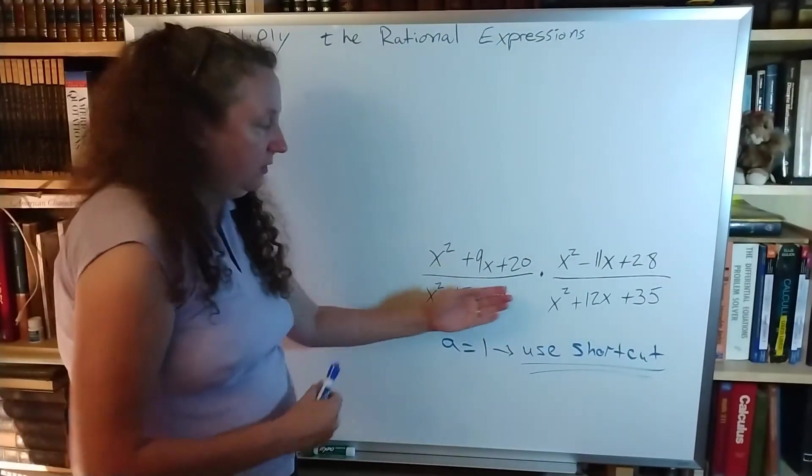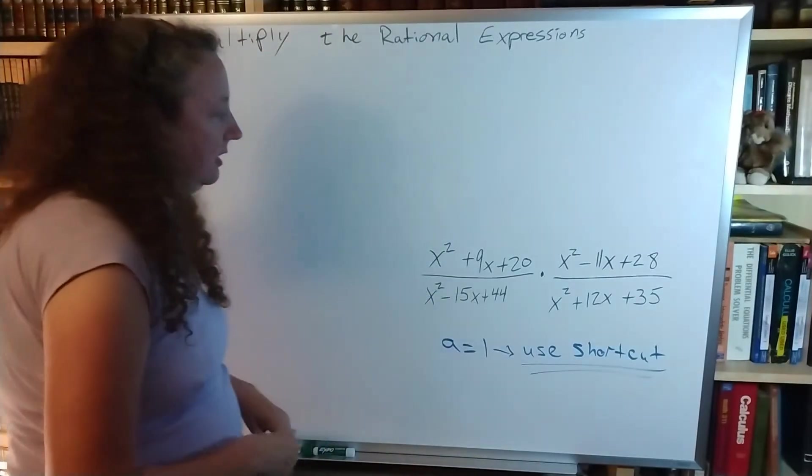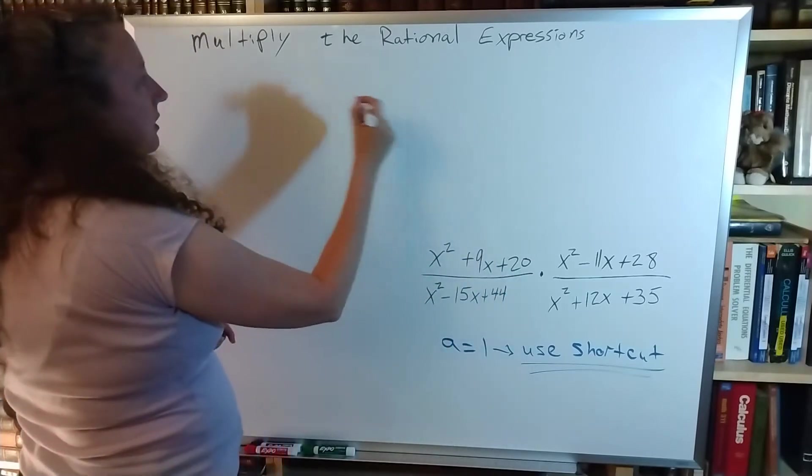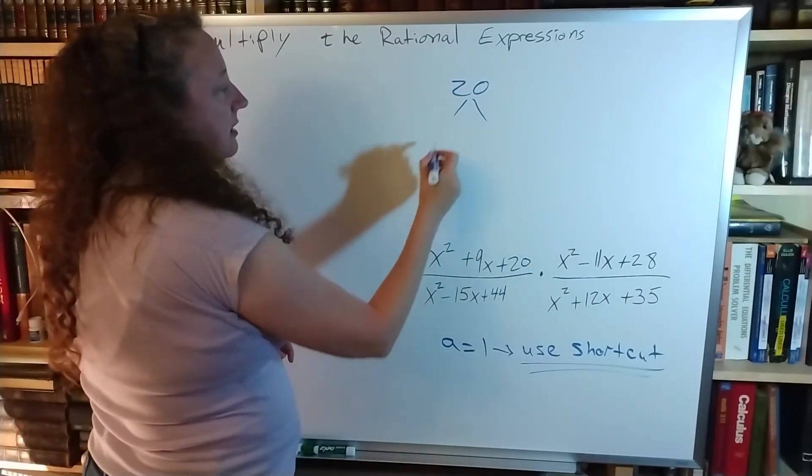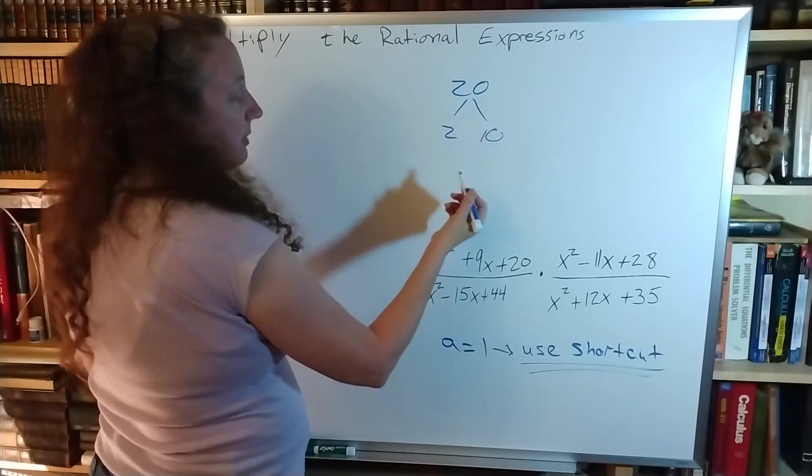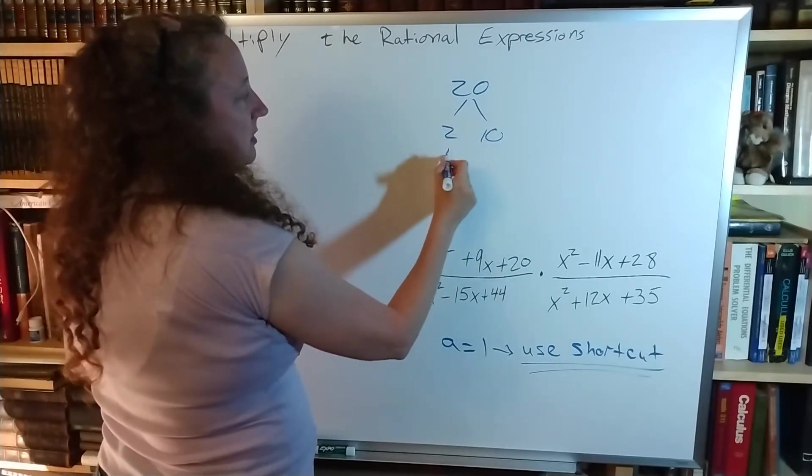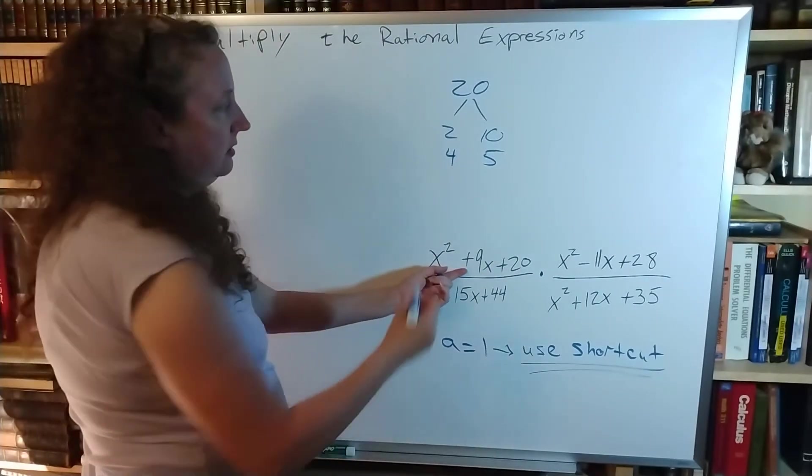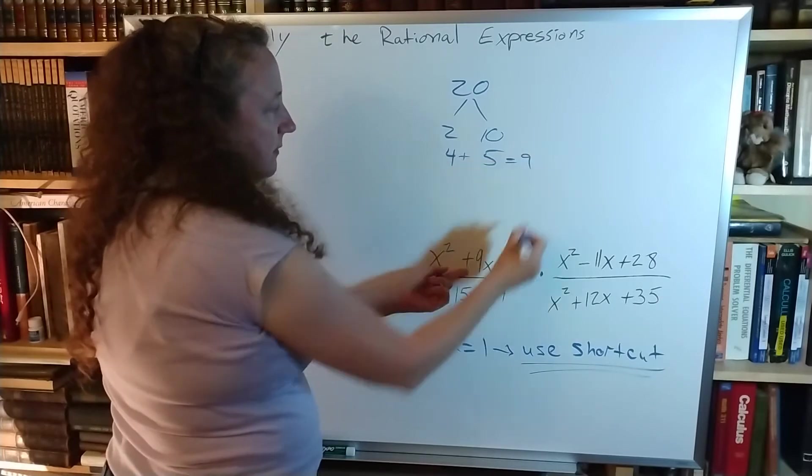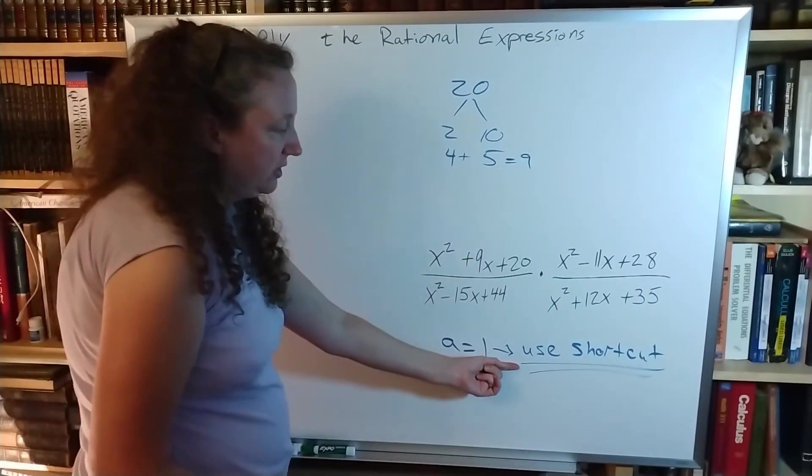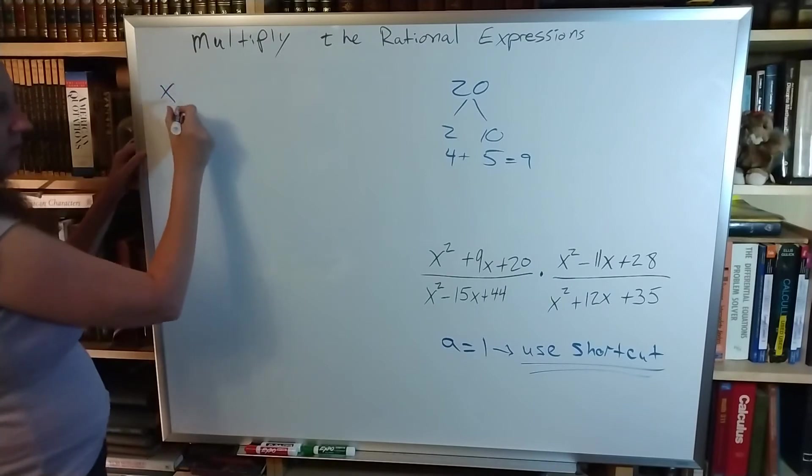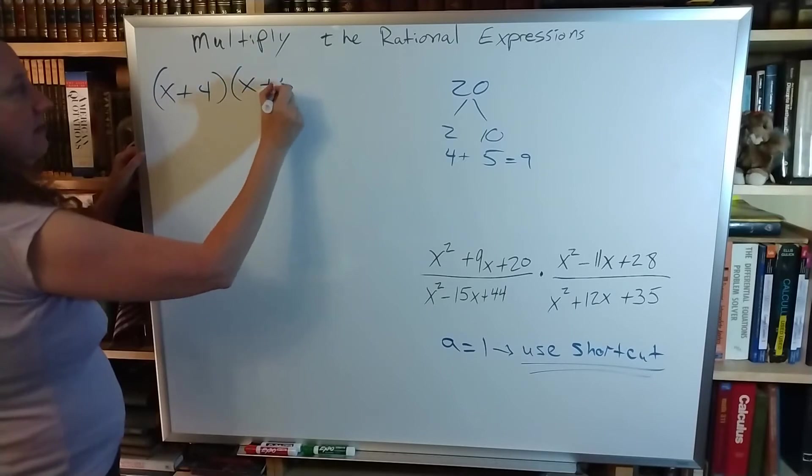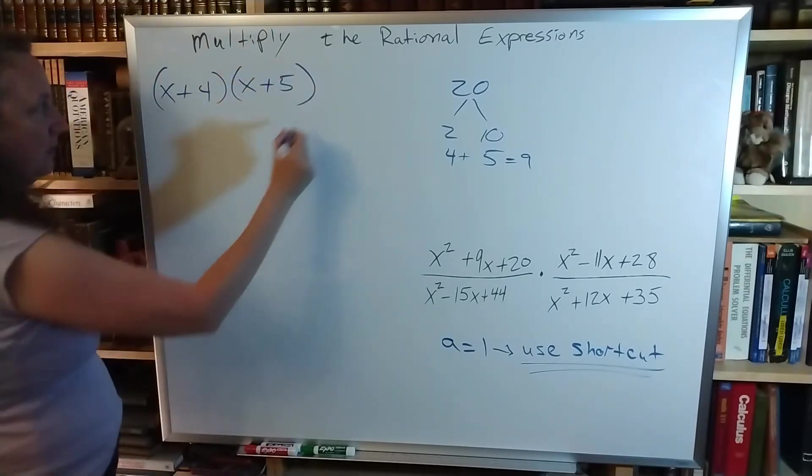So first one I'm going to start with is the first one I see. I have my c is positive, 20. So I have my 20. Factor that. It could be 2 times 10. It could be 1 times 20. It could be 4 times 5. Which one of those adds up to 9? That would be the 4 times 5. So now I'm going to use my shortcut. And I have x plus 4 times x plus 5. Over.